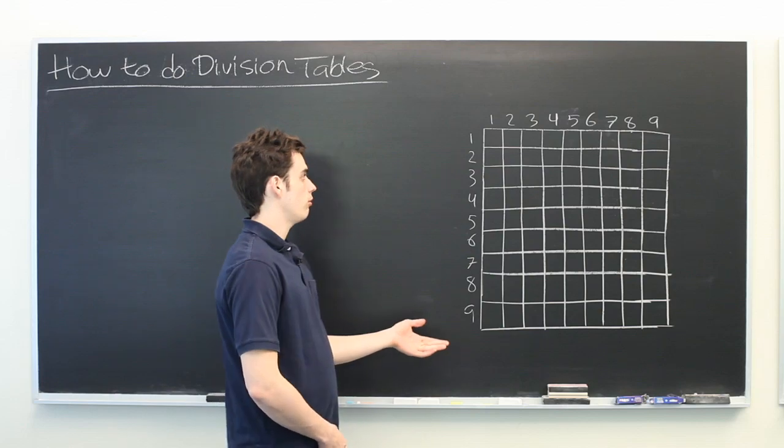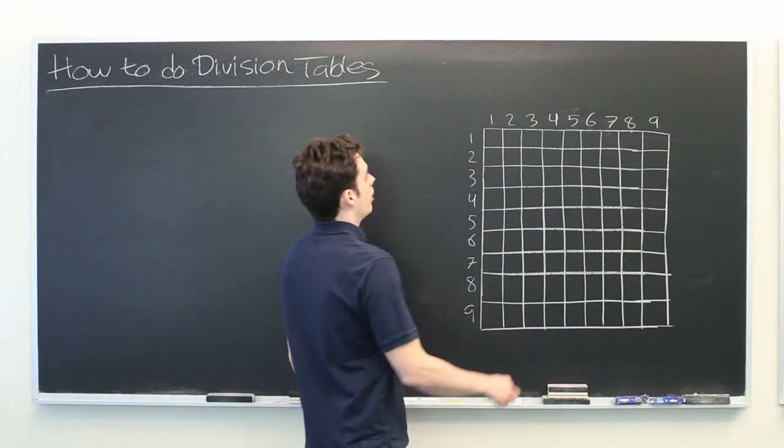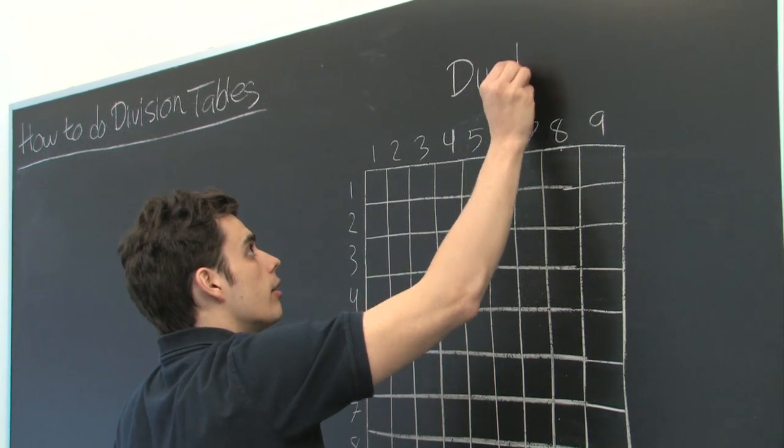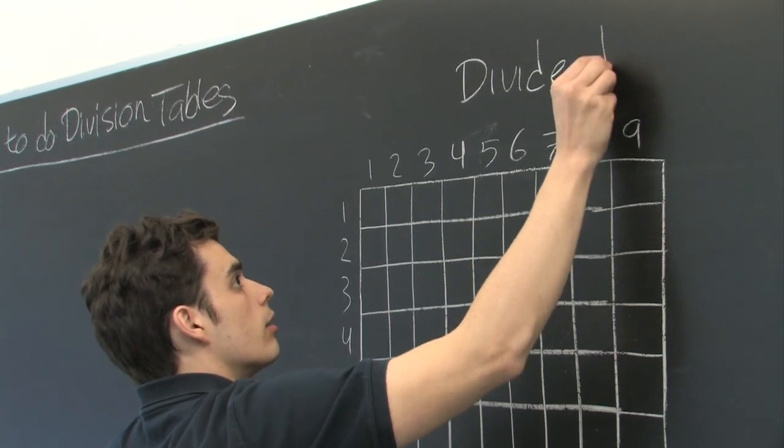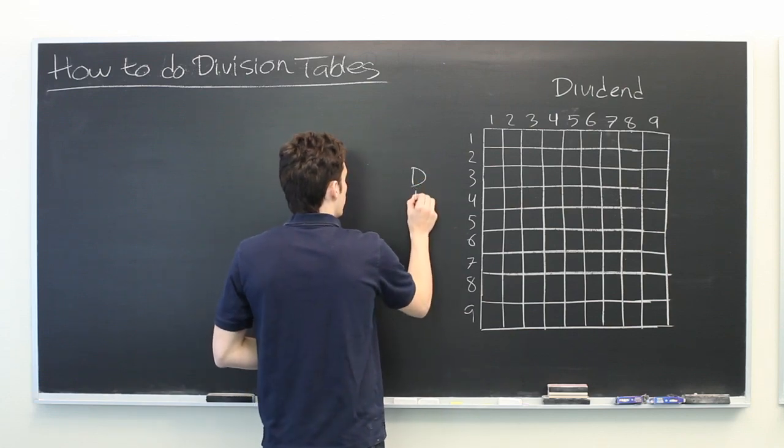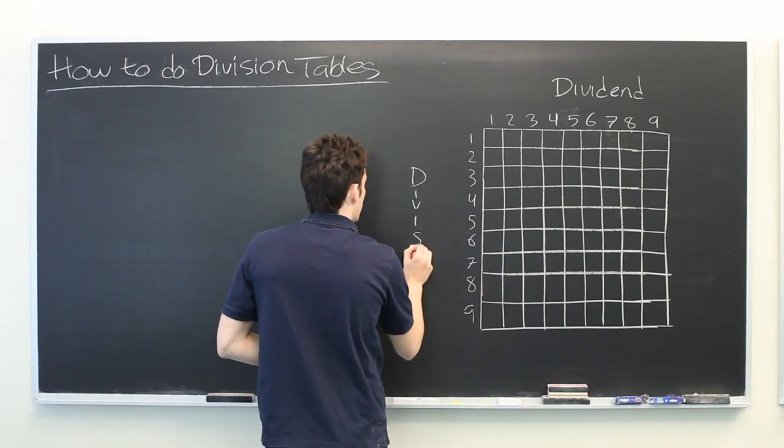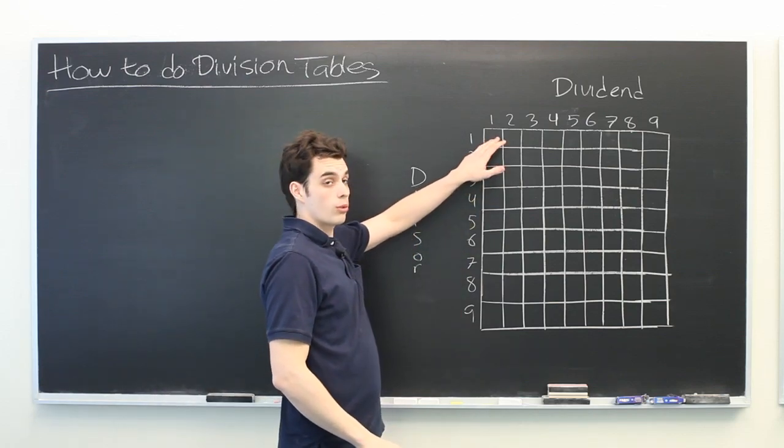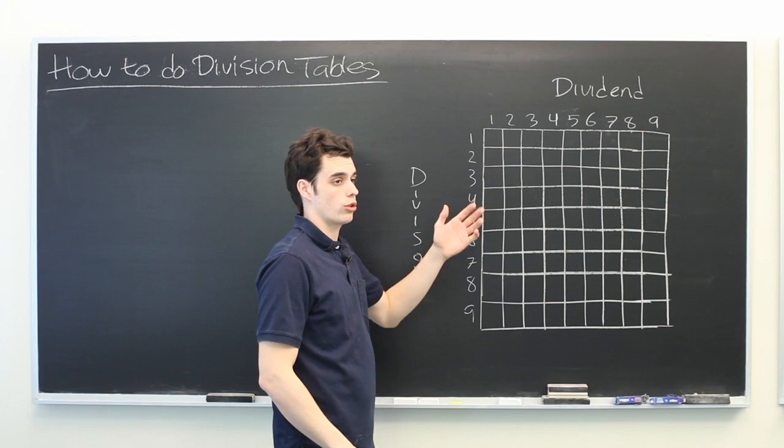So here we have a division table from one through nine. Let's say that the top numbers represent the dividends, and the numbers alongside are the divisors. And of course, the numbers in the squares will represent the quotients.